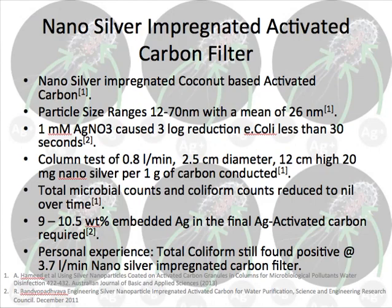Nanosilver activated carbon is the most common nanosilver filter in the field. It has been tested with particle sizes ranging from 12 to 70 nanometers, with a mean size of 20 nanometers. In the test, 1 mmol silver caused 3 log reduction of E. coli in less than 30 seconds. With a column test of 0.8 liters per minute, 2.5 centimeters diameter, and 12 centimeters high, 20 mg nanosilver per 1 gram of activated carbon showed total microbial and coliform removal. It is concluded that at least 9 to 10.5 weight percentage of embedded nanosilver in the final nanosilver activated carbon is required.